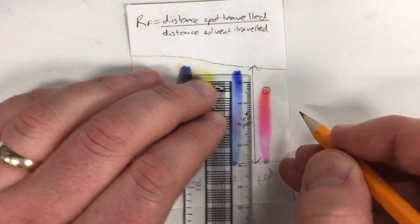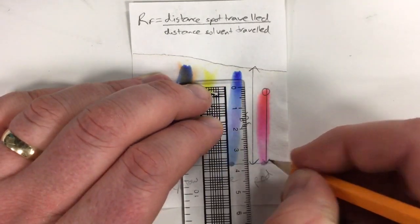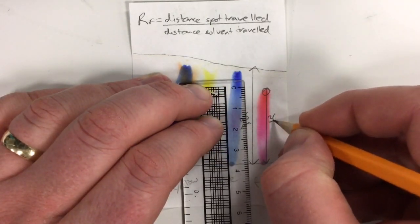These values can be determined using a ruler and measured directly on the chromatogram. For each of the different coloured pigments we take the peak point at which it has risen up the chromatography plate.